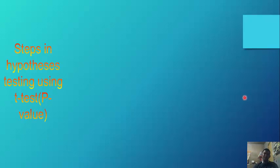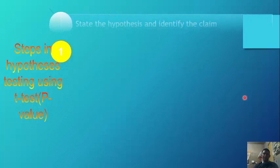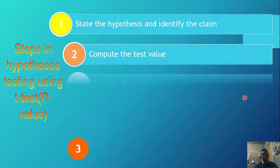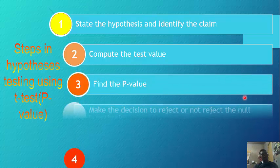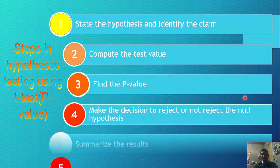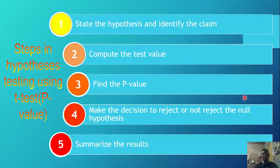Now we have the steps in hypothesis testing using the t-value with the p-value method. Step 1: state the hypothesis and identify the claim. Step 2: compute the test value. Step 3: find the p-value. Step 4: make the decision to reject or not reject the null hypothesis. Step 5: summarize the results.